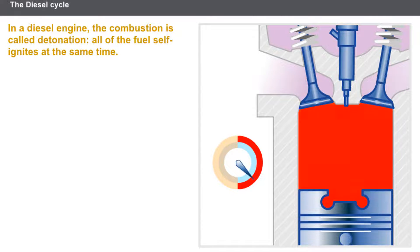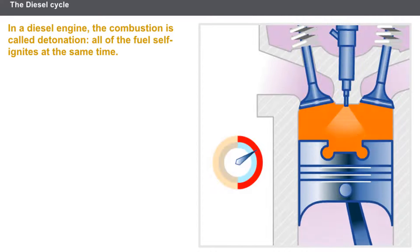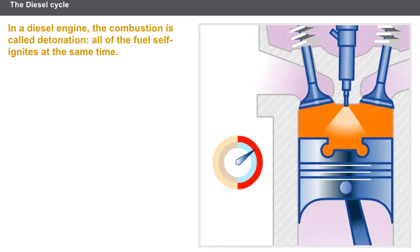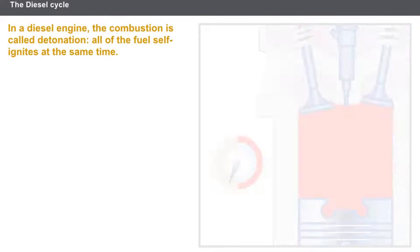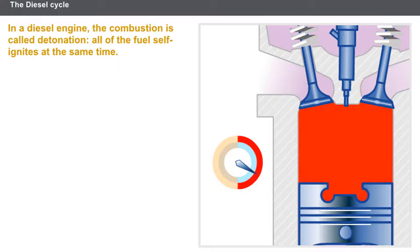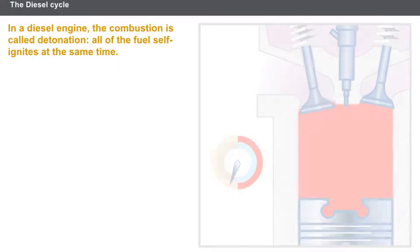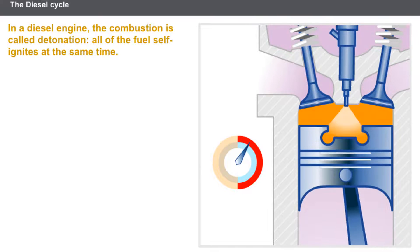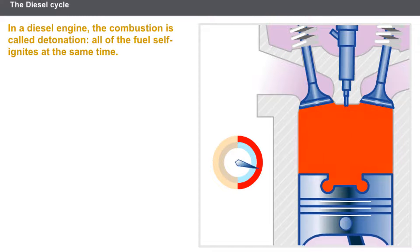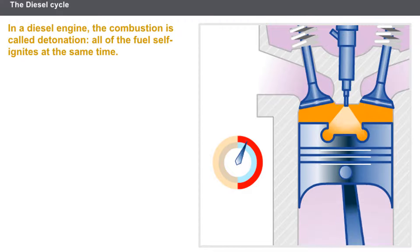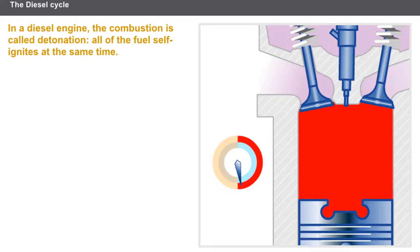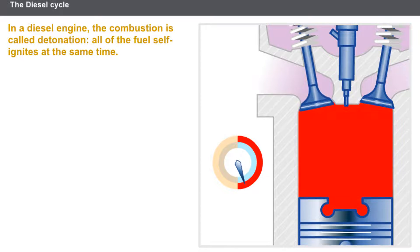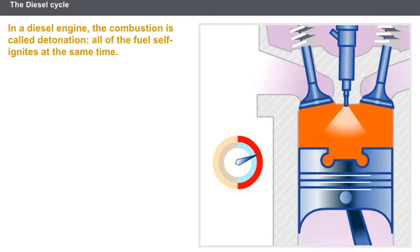During the combustion or power phase, the two valves are closed. Combustion is triggered by spraying the diesel fuel into the hot air. The combustion is called detonation — all of the fuel self-ignites at the same time. The rapid combustion causes a very high pressure above the piston, which causes the piston to descend and creates the engine torque.